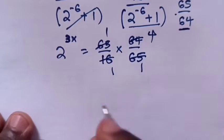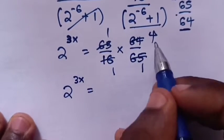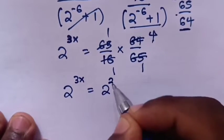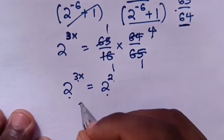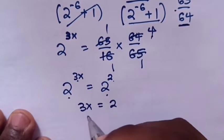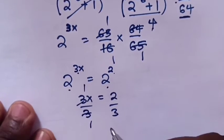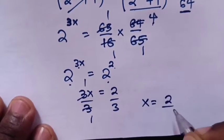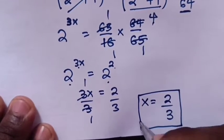So 2^(3x) = 4, and 4 is the same as 2^2. Since the bases are the same, we compare powers: 3x = 2. Dividing both sides by 3 gives x = 2/3. This is the answer.